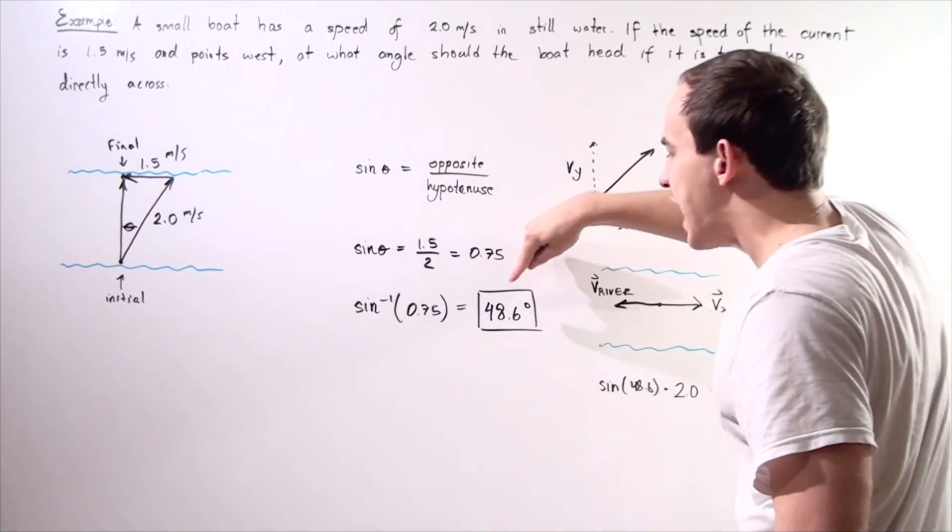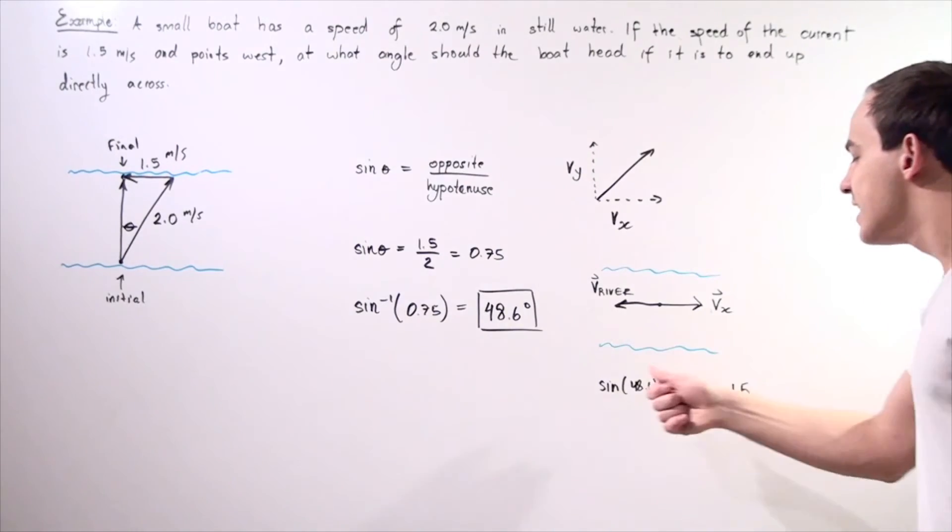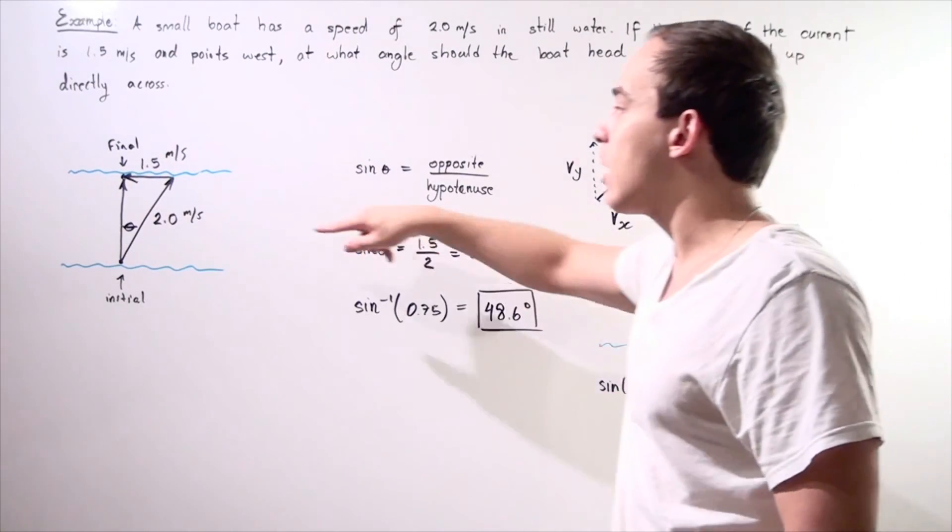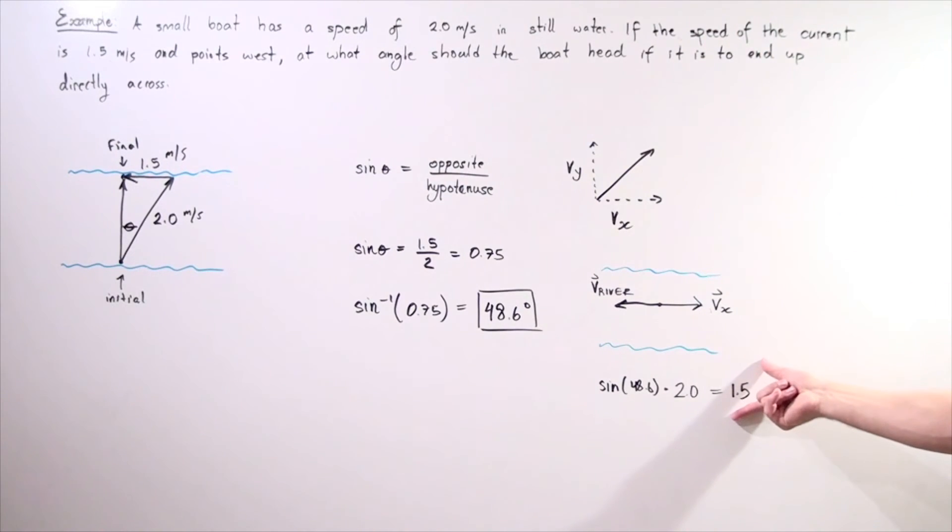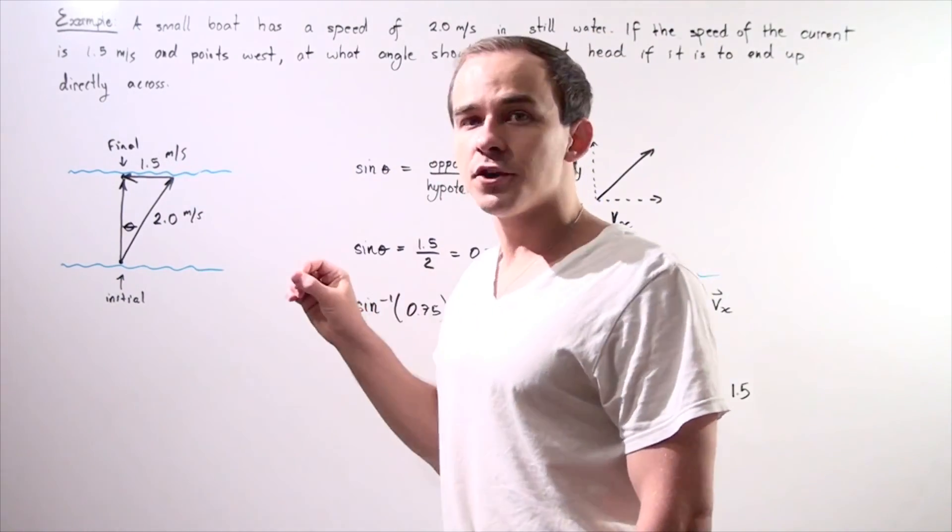In fact, if we have this angle, notice that sine of this angle multiplied by our velocity of 2.0 meters per second gives us 1.5 meters per second, which is exactly the same as the current of the river but it points in the opposite direction.